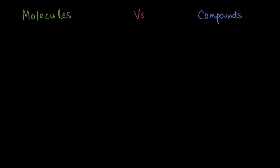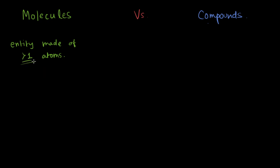So let us start with the definition of molecules. Molecules are any entity that is made of more than one atom — that is the key here. So what are some examples? Let us take a simple molecule: the hydrogen molecule, H2.